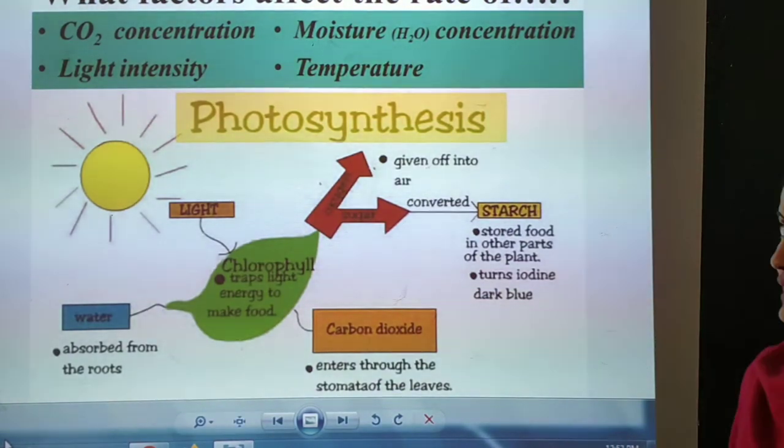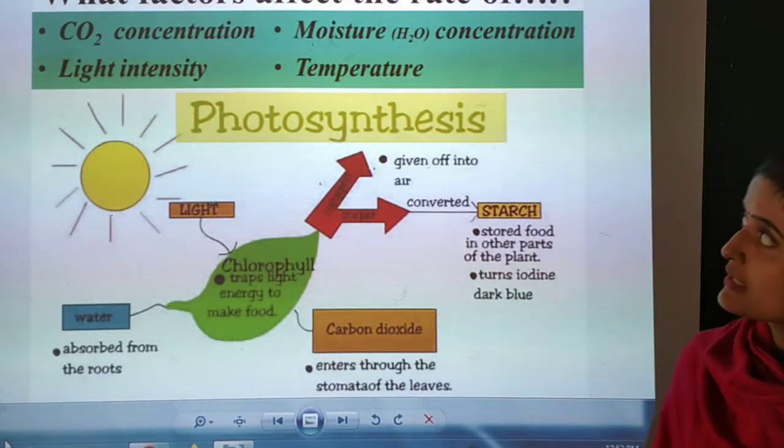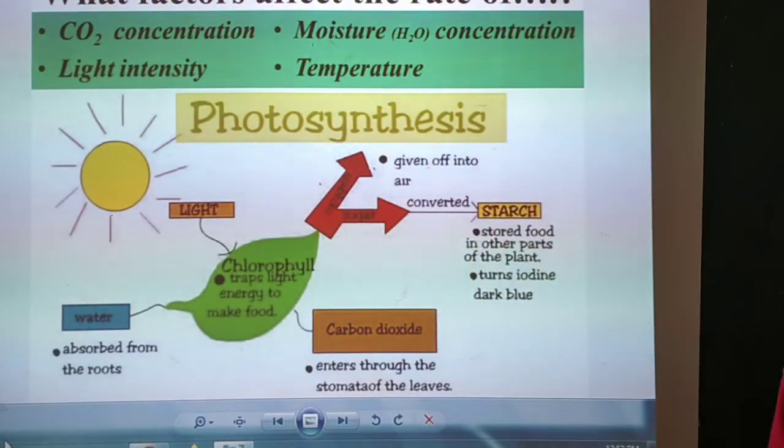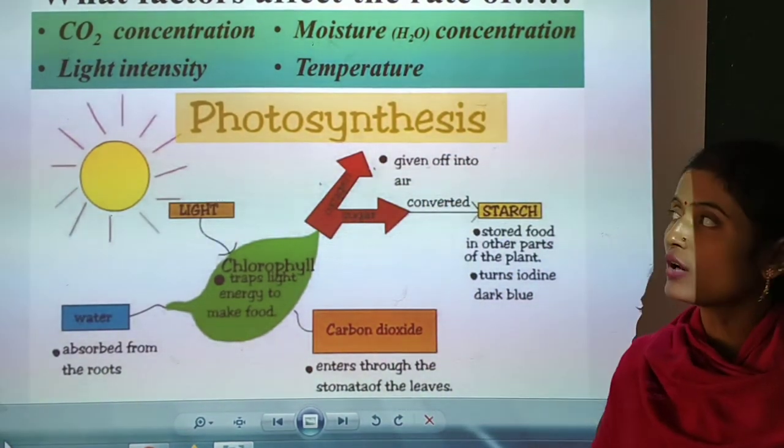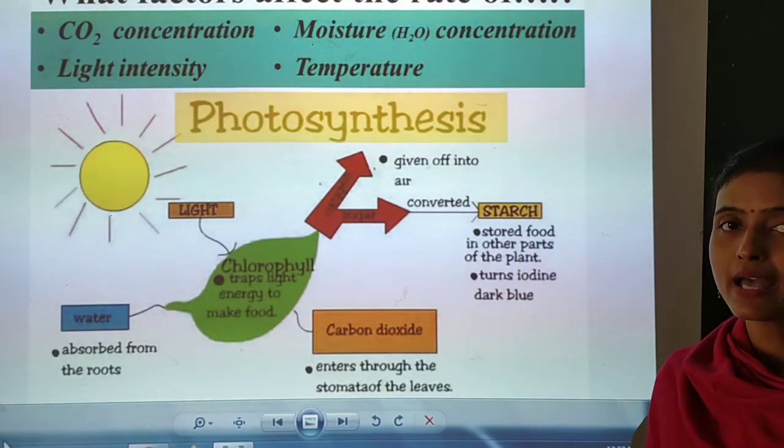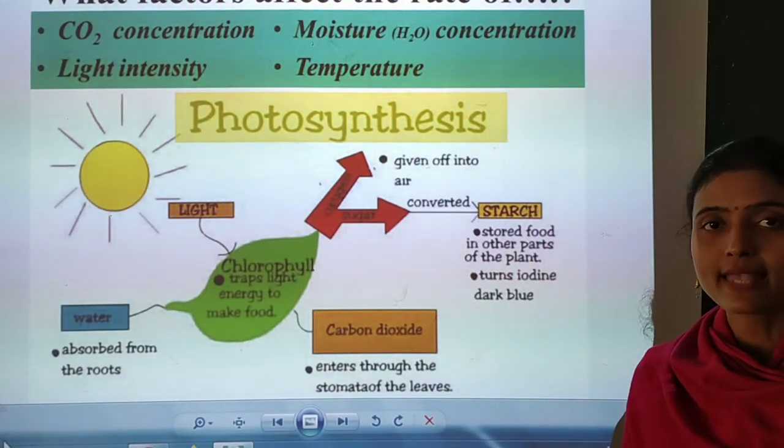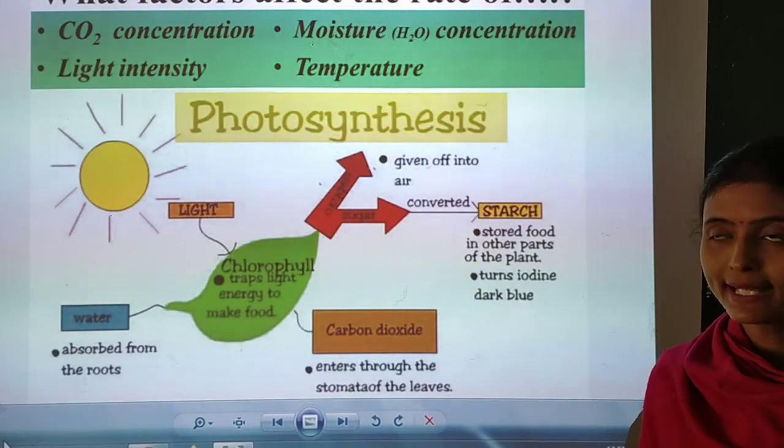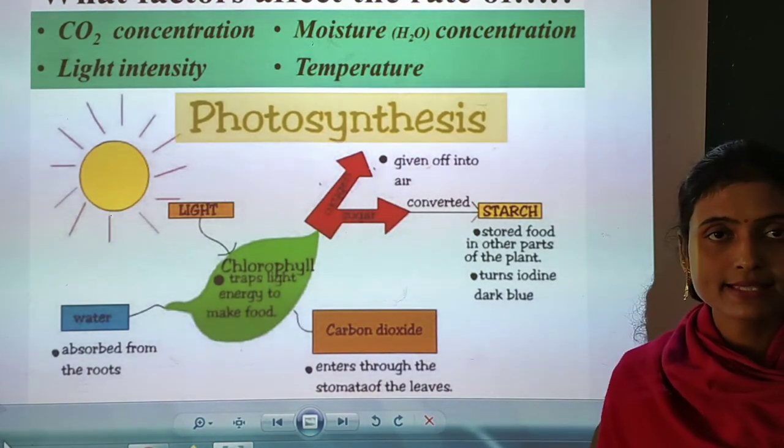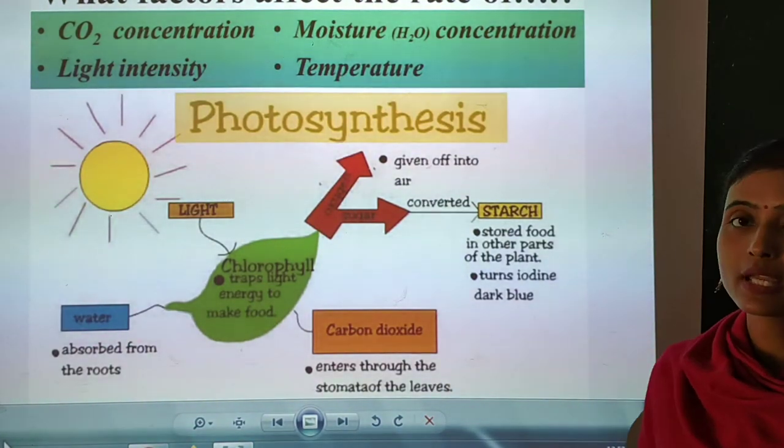This much is clear, students. Once again, what is photosynthesis? Photosynthesis. And what factors affect the rate of photosynthesis? Four factors are involved: first one, carbon dioxide concentration; second one, water concentration; third one, light intensity; and the fourth one, temperature.